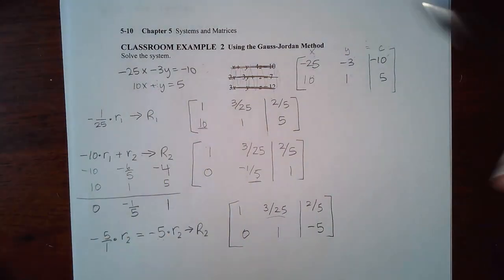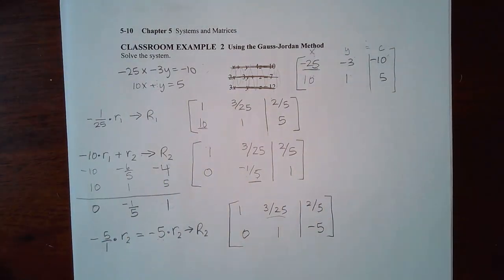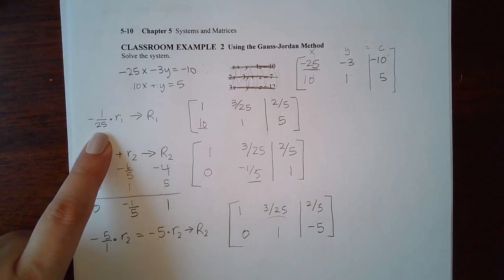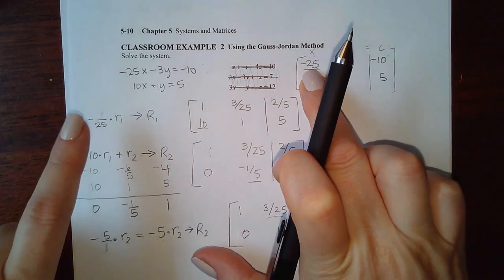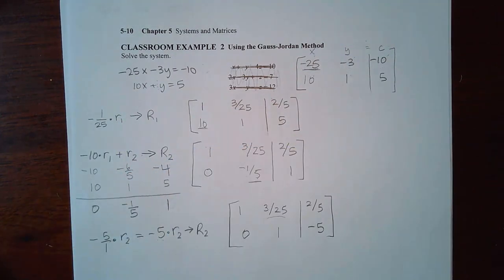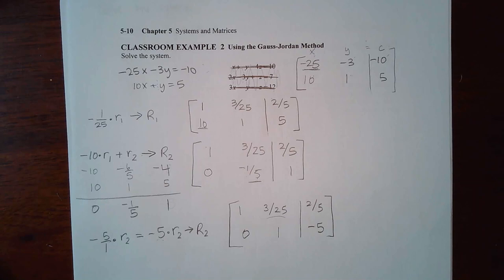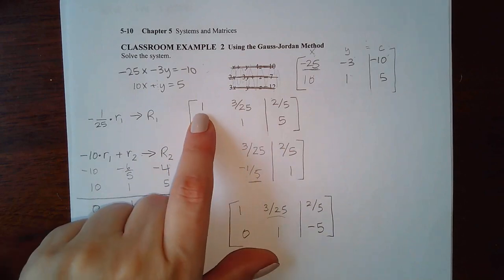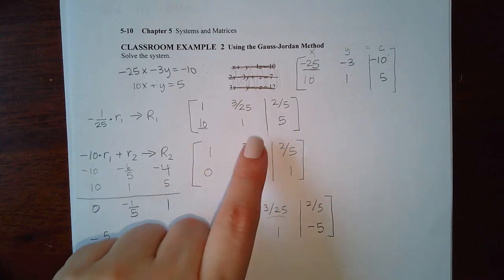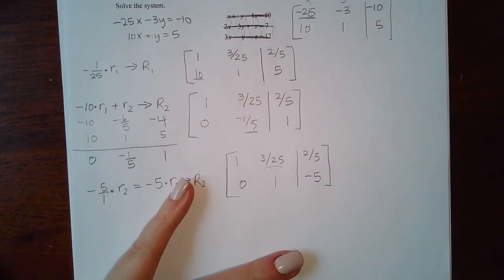I started doing my operations. The first step was to turn this entry into a 1, and we do that by multiplying by the reciprocal. The reciprocal of -25 is -1/25. I can't change the sign because I want a positive 1 in the end — negative times negative gives positive 1. So I multiplied every entry in row 1 by -1/25 and ended up with 1, 3/25, and 2/25. Row 2 did not change.